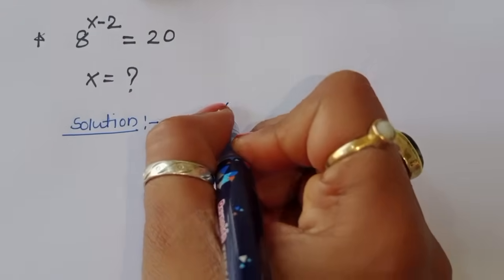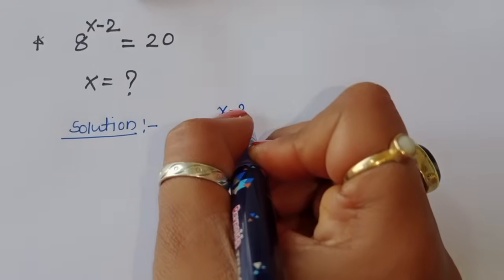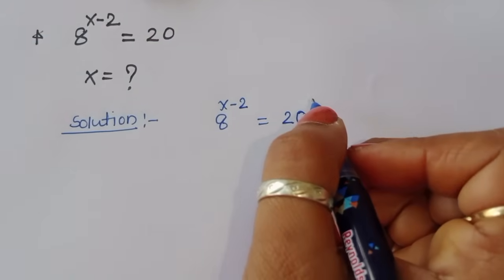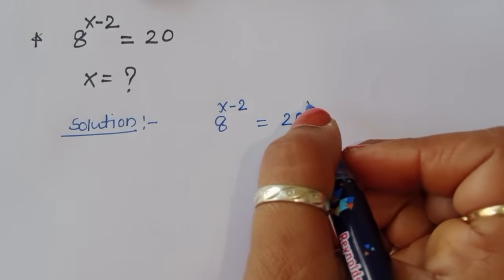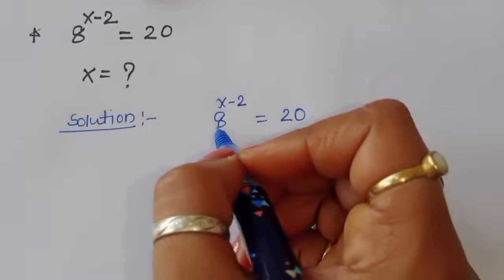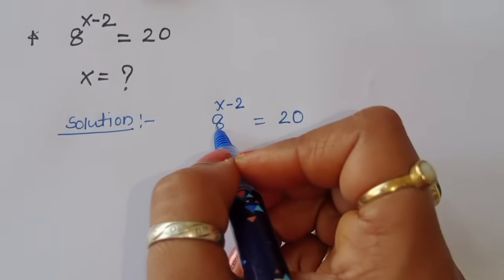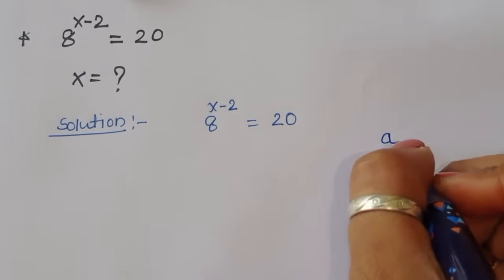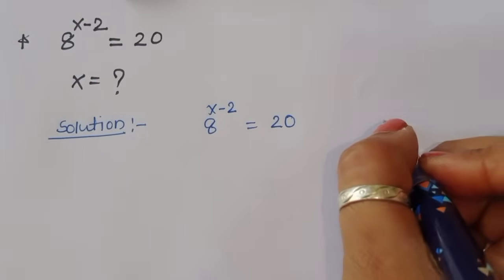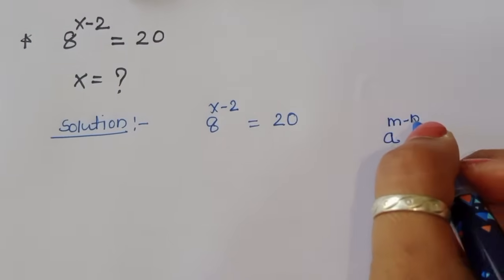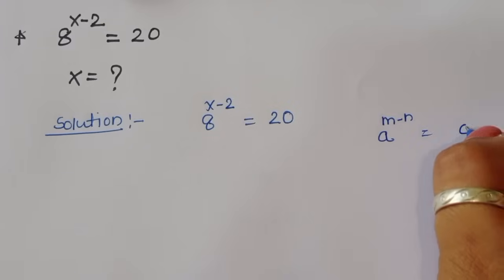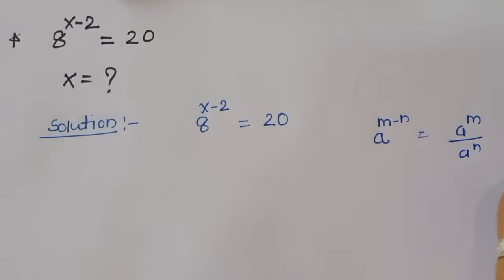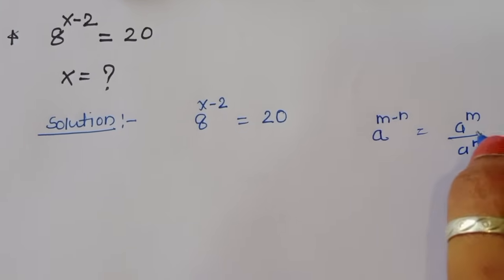8 power x minus 2 is equal to 20. We can write this as 8 power x divided by 8 power 2, because we are using the formula: if a power m minus n is given, we can write this as a power m divided by a power n.